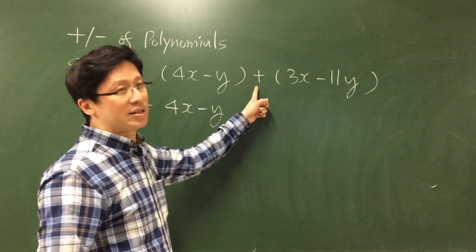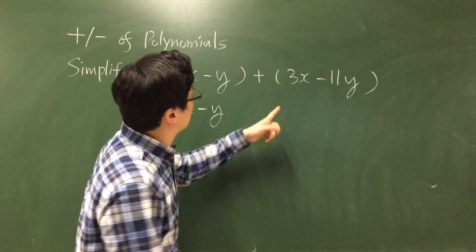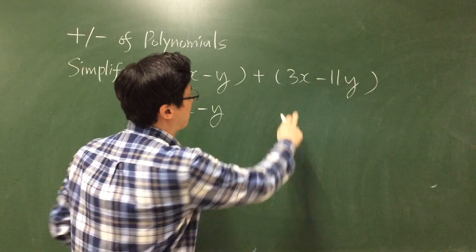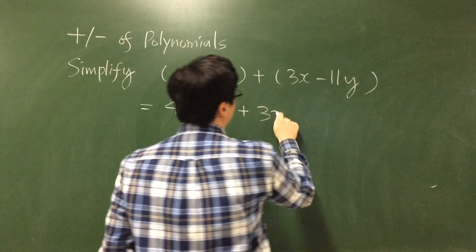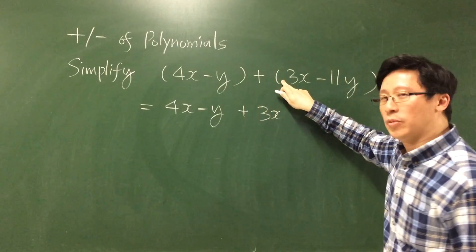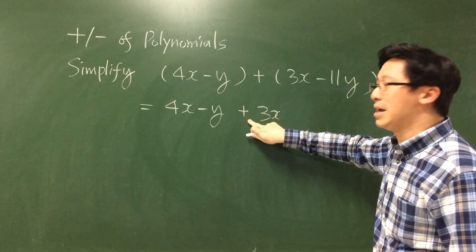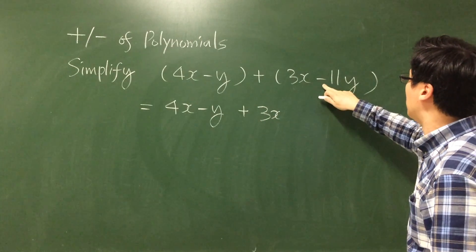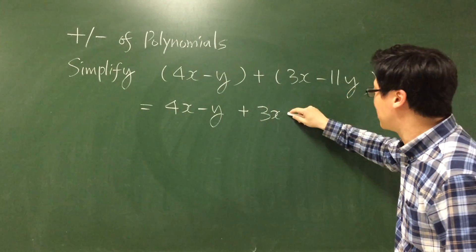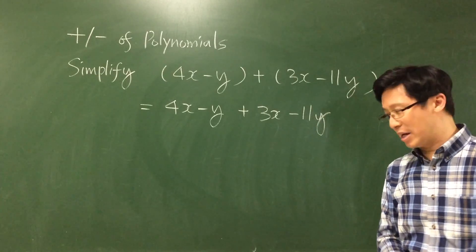4x-y. So this is a plus sign, so you don't need to care about the sign, you just copy the sign. Positive 3x remains as positive 3x. Minus 11y remains as minus 11y. They are just the same.